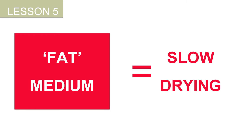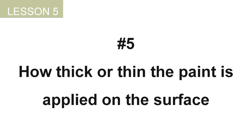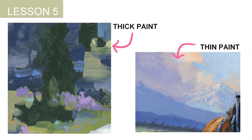Another factor that affects the drying rate is how thick or thin the paint is applied on the surface. Any color applied more thickly will dry slower than if it is thinned or brushed out on a canvas. So it's important to take the drying times of your colors into consideration as part of the overall layering structure of your painting.